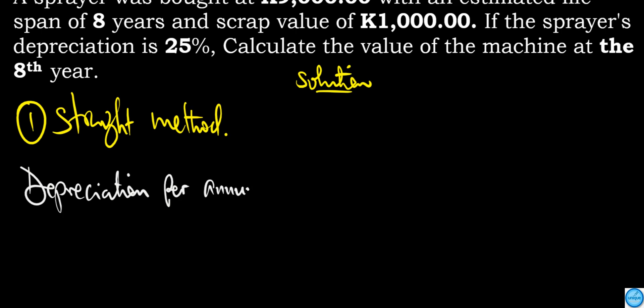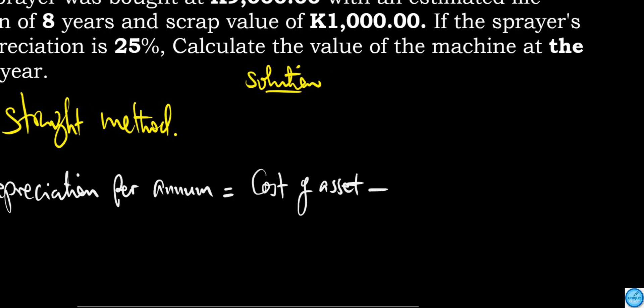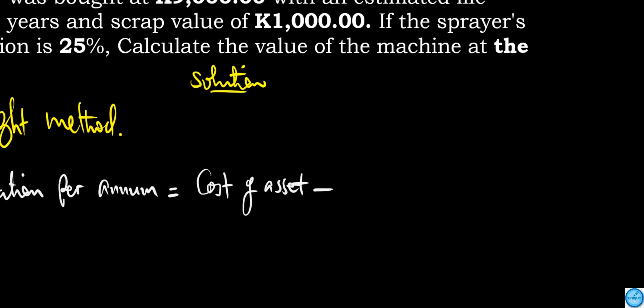The formula is: depreciation per annum equals cost of asset minus estimated scrap value (or salvage value) divided by life span.